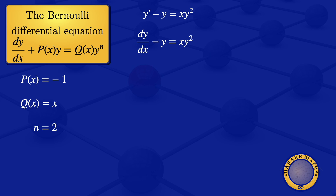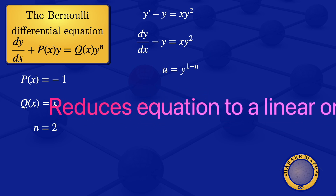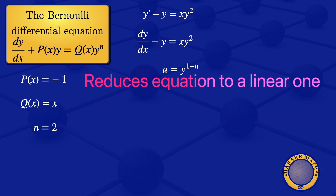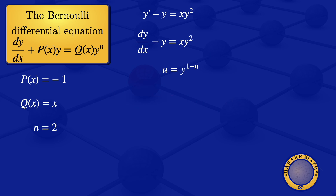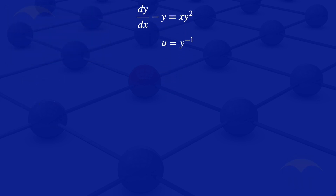To solve our Bernoulli differential equation, we use the substitution u equals y to the power 1 minus n. This substitution reduces the Bernoulli differential equation into a linear differential equation. Substituting the value of n that we have, 1 minus 2 gives us u equals y to the power minus 1. So we have our substitution.